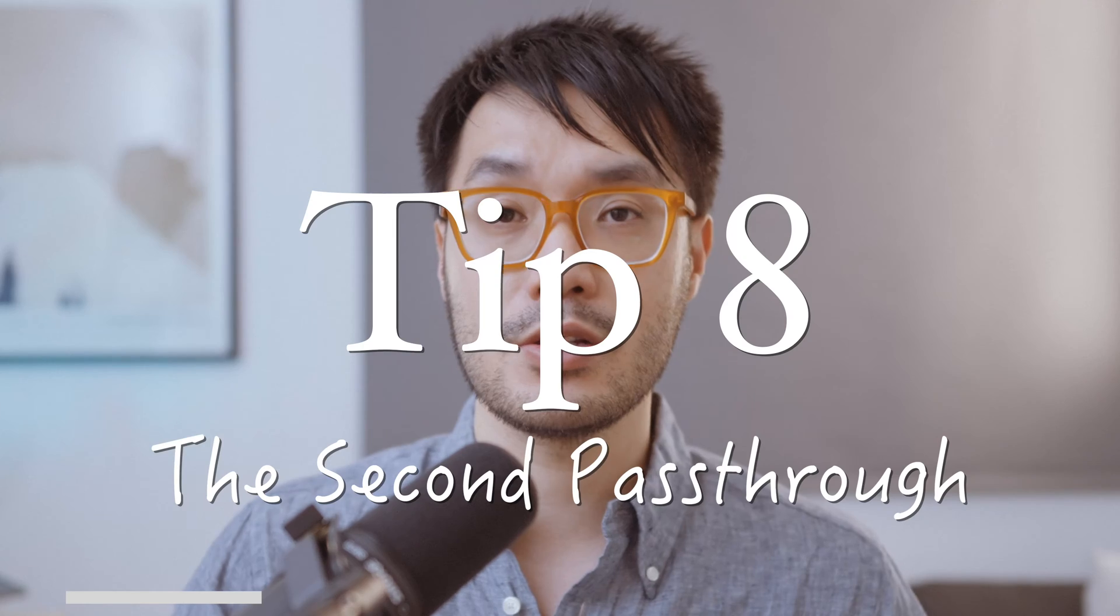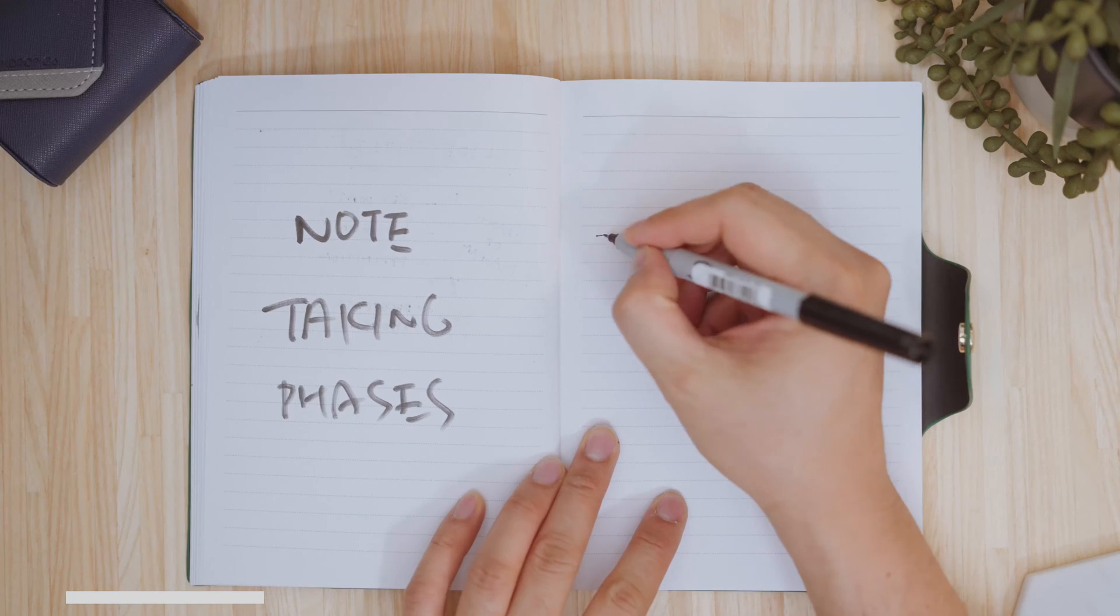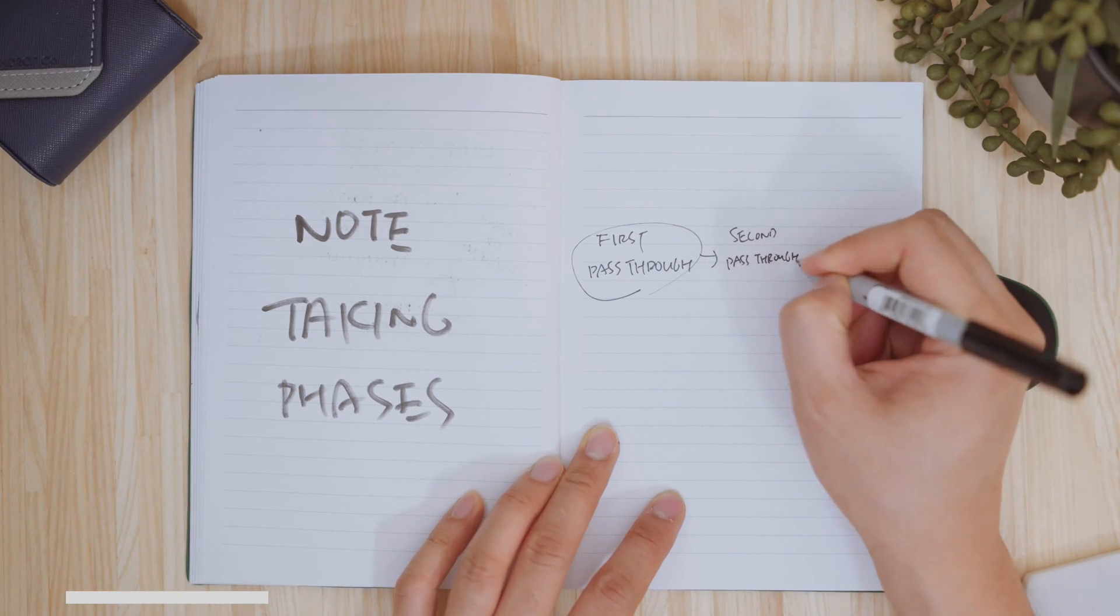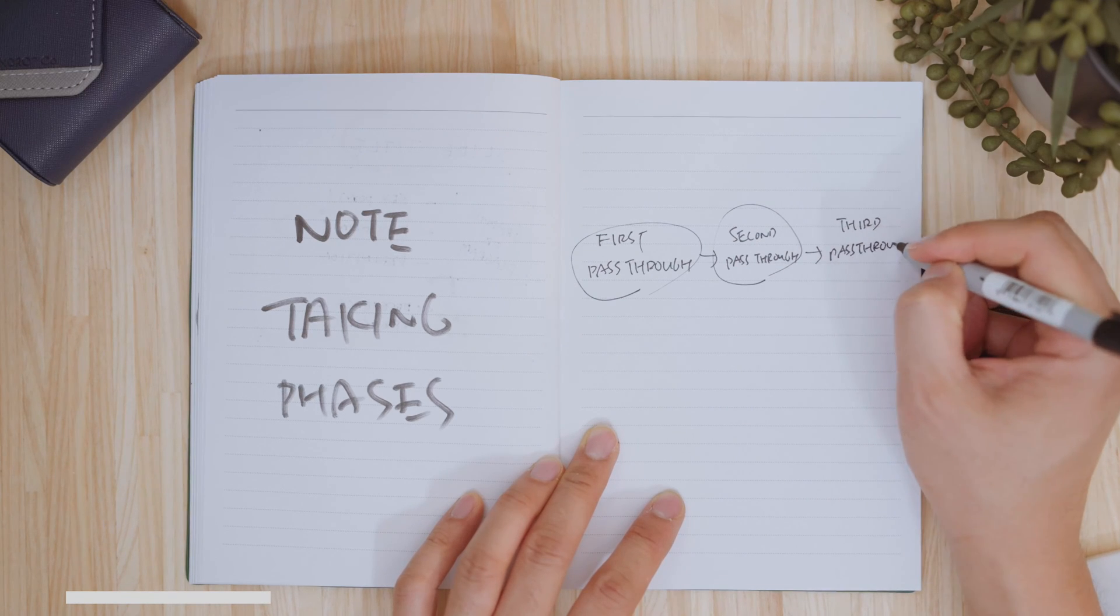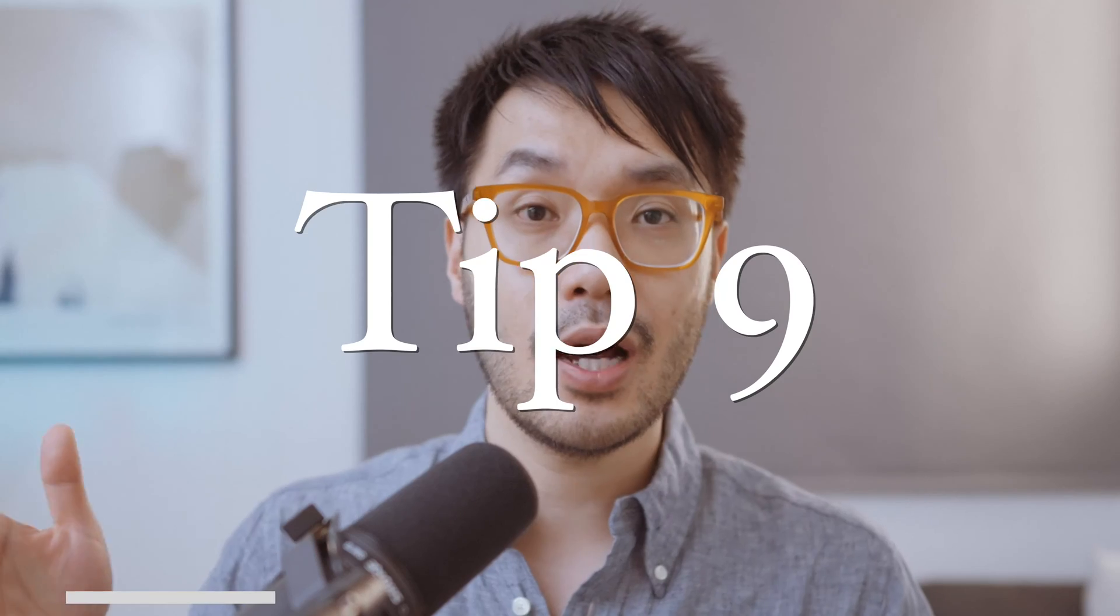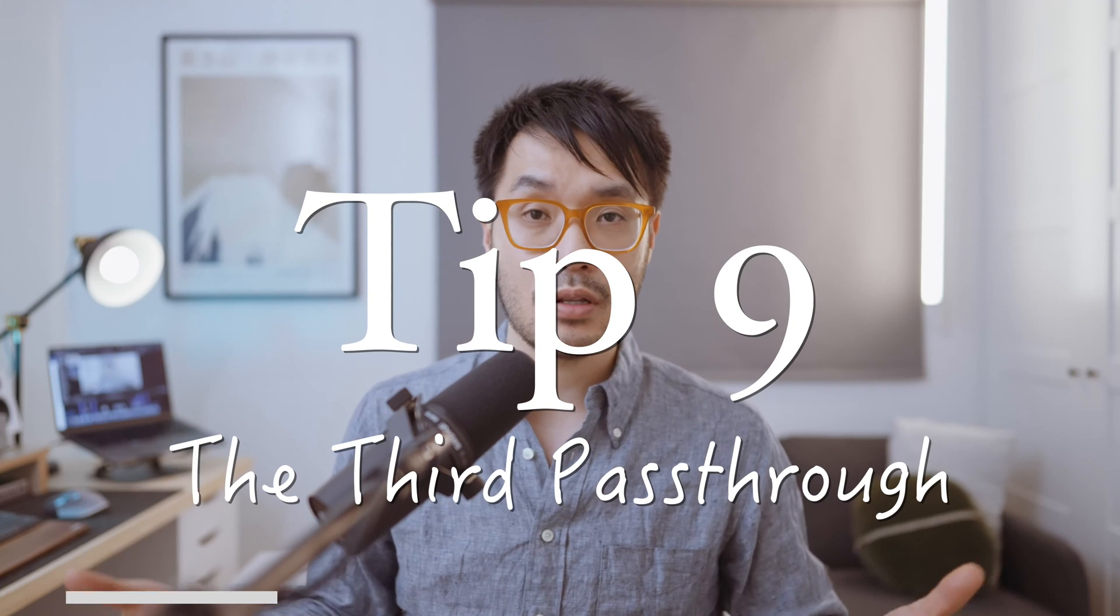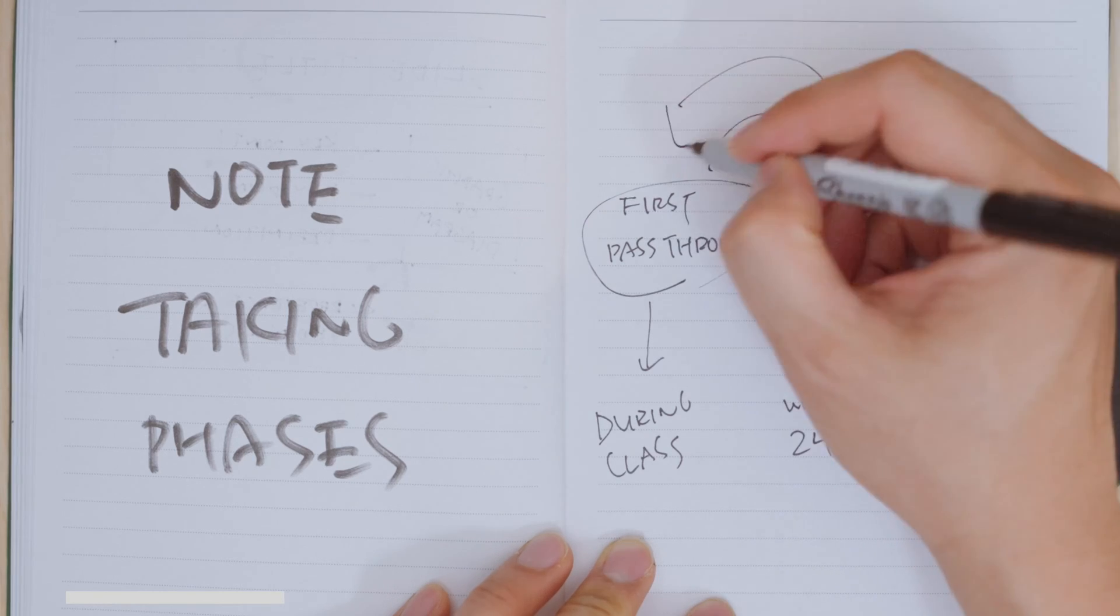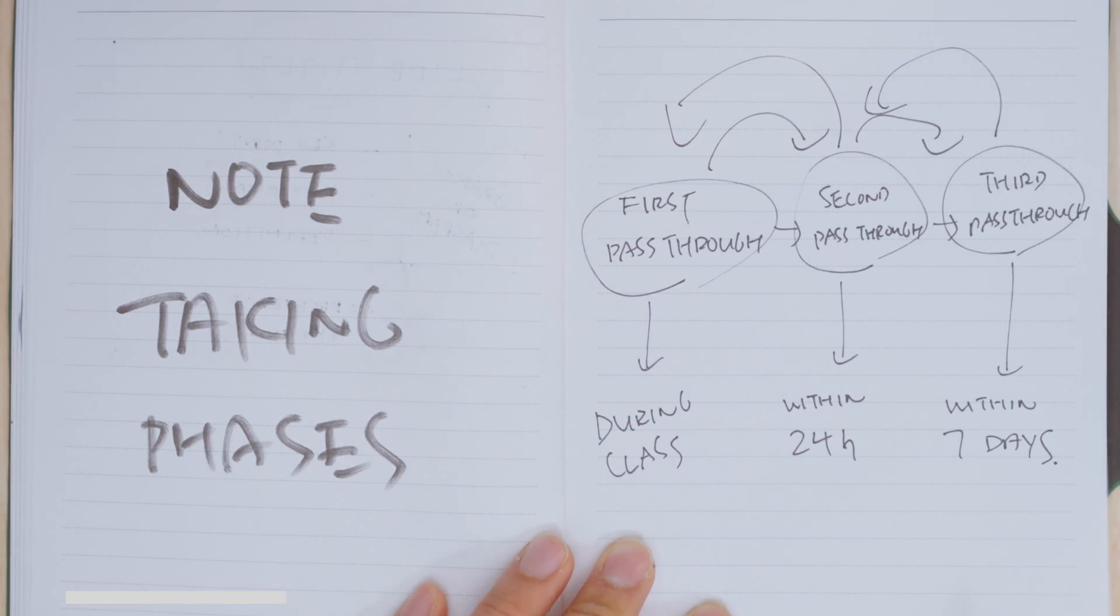Tip eight: the second pass. After you take notes live in class for the first time, you should revisit those notes within 24 hours and summarize them again. Address any key points or questions before the next class. Tip nine: the third pass. A week after class, your note summary is a broader reflective exercise. Read through your first and second pass-throughs and summarize everything again. This constant interaction will help secure it into your long-term memory.